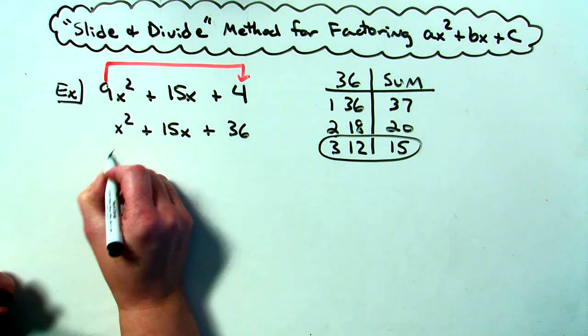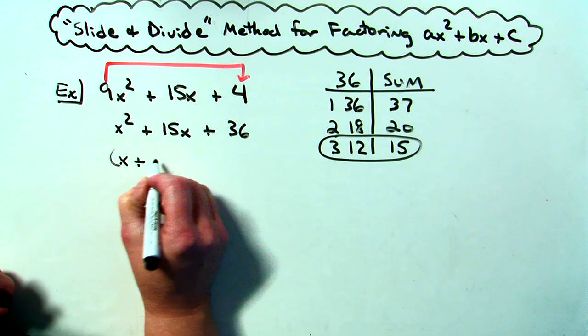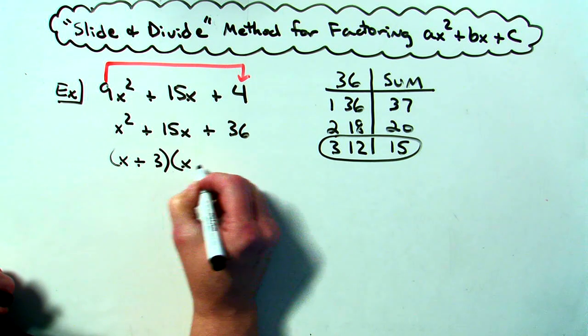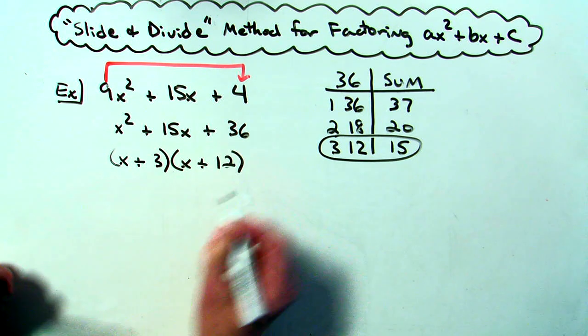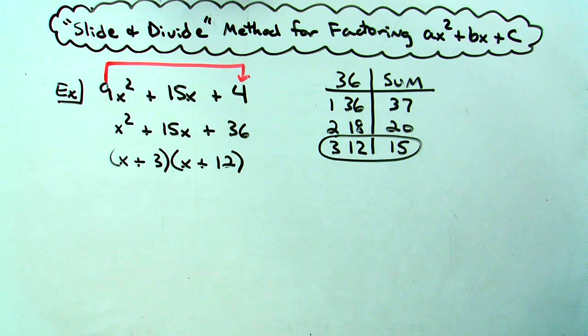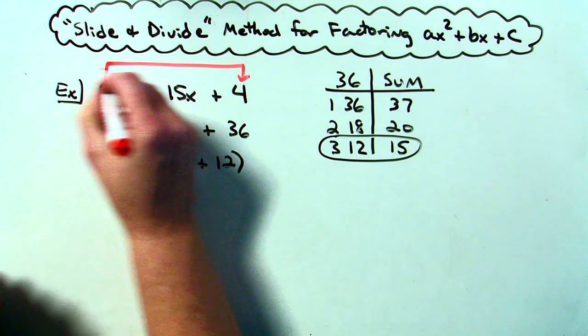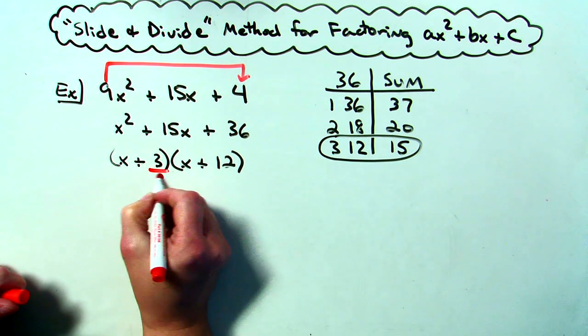So there is factoring that basic trinomial. I will have an x plus 3 and an x plus 12. Now this time I've got to do the divide part. I've done the slide. Now I've got to divide.